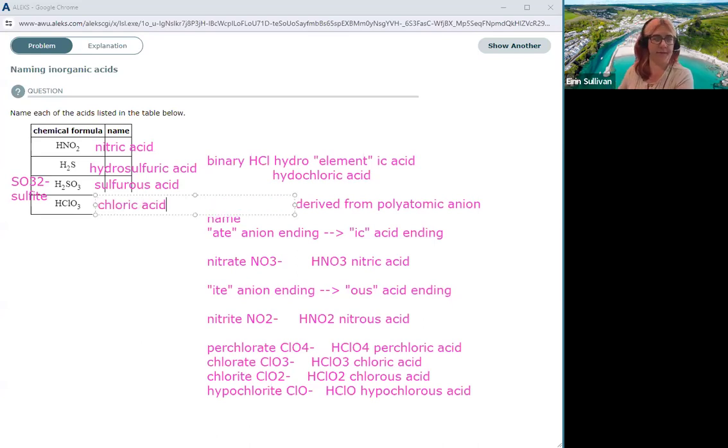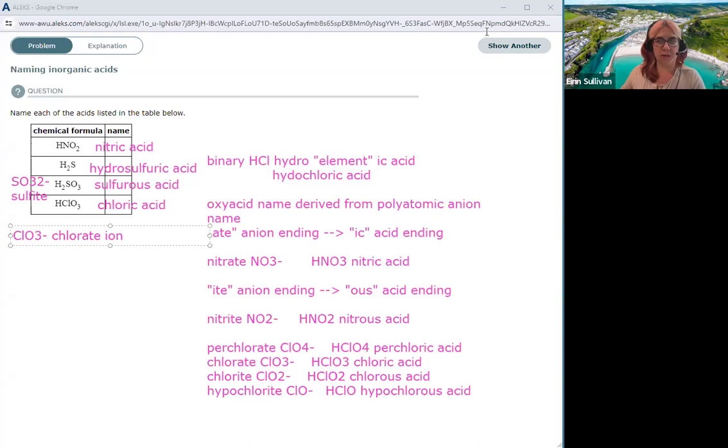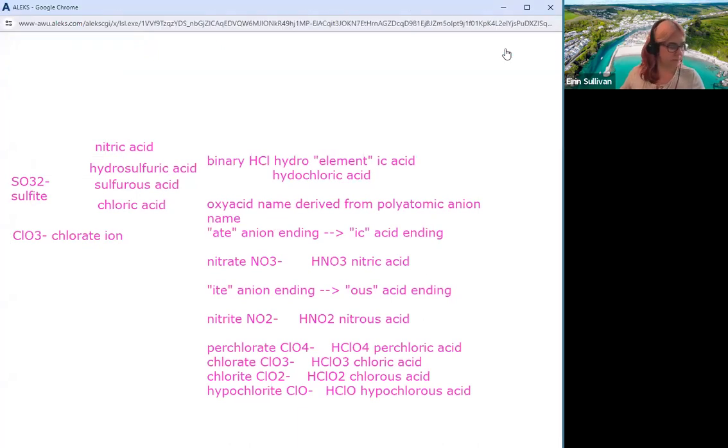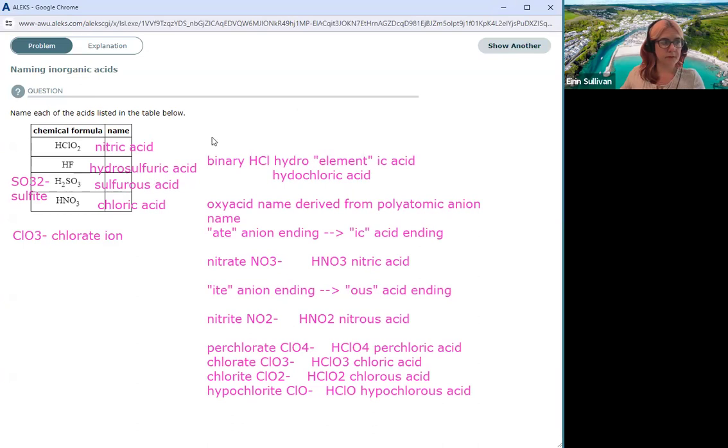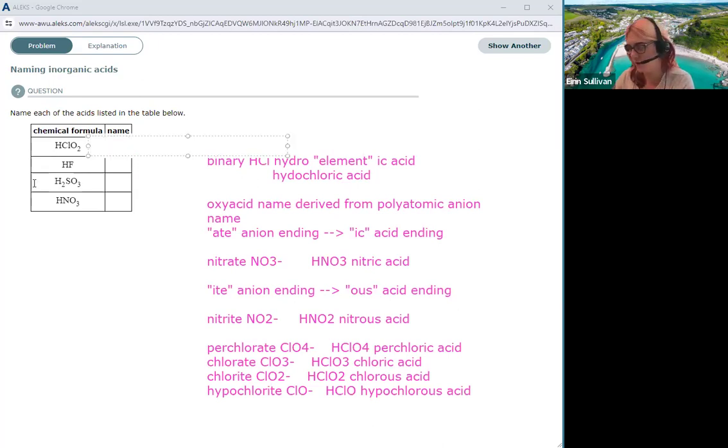HClO3 will be chloric acid, coming from ClO3 minus being the chlorate ion. So let's do another one. HClO2 then, ClO2 minus is the chlorite ion, so this is chlorous acid because ClO2 minus is the chlorite ion.